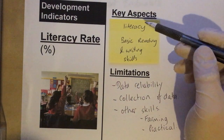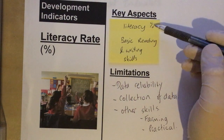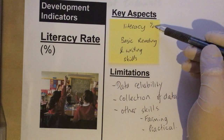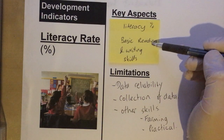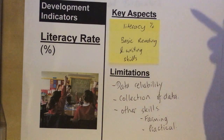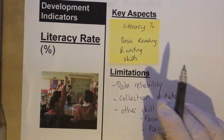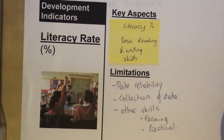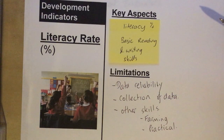The literacy rate is measured as a percentage of the population in the country that have basic reading and writing skills. This is a really useful indicator because it tells us how much money the government will invest in education, and also how that is applied — because it's to do with opportunity and how people are going to use that education.